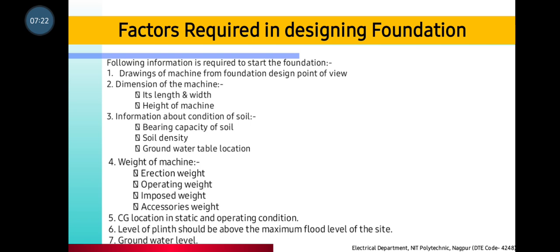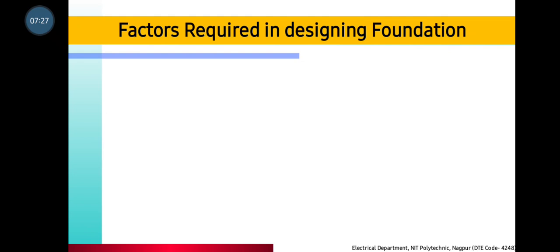You have to check the ground water level. These are the factors in designing the foundation. Whether the machine is static, rotating, or reciprocating — if your machine is static, like a transformer, then the foundation will be different. If the motor is rotating, the foundation will be different. If it is reciprocating, it will be different. Because every machine is different, the foundation will be designed differently.